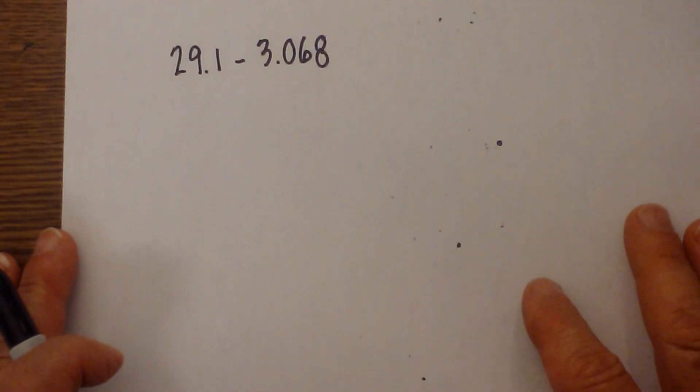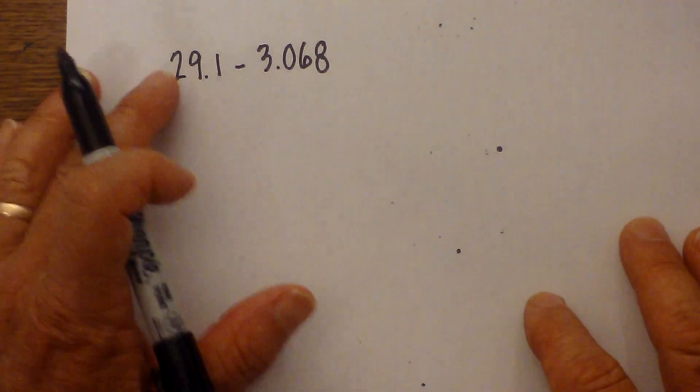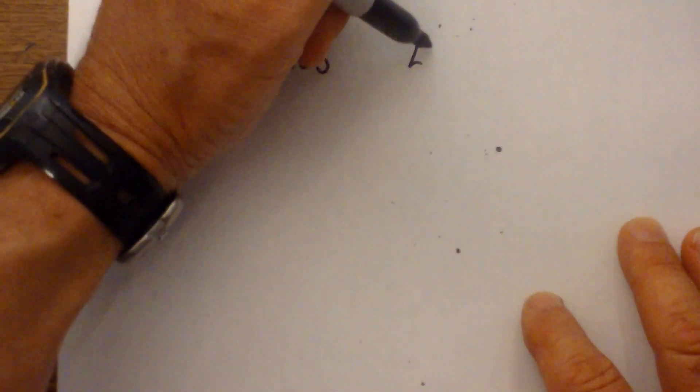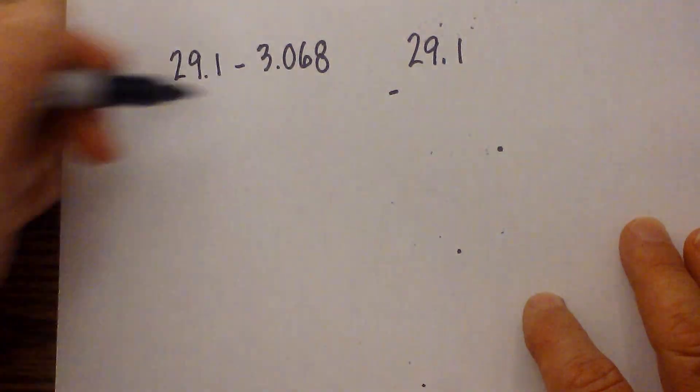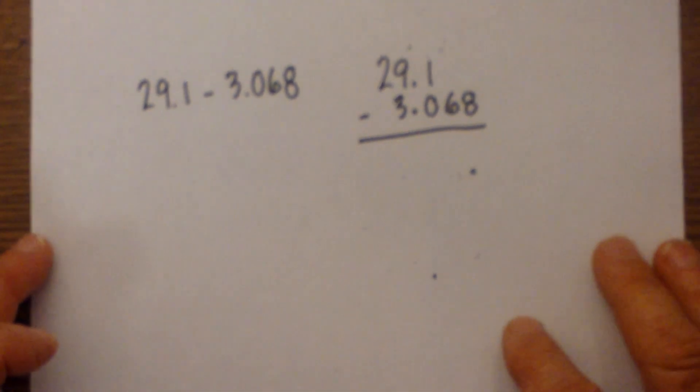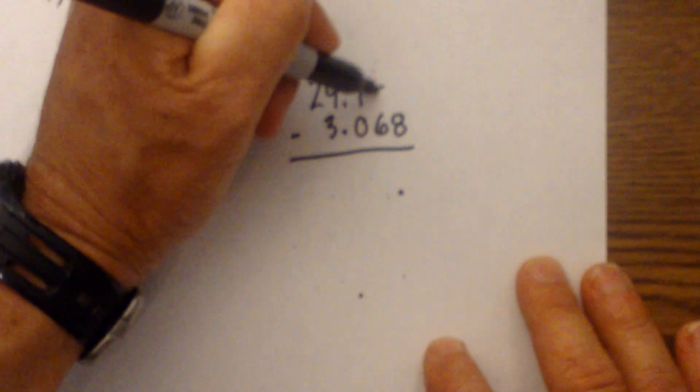Okay, let me work this one first. 29.1 minus 3.068. I'm going to rewrite 29.1 minus 3.068. Notice I've lined up the decimal, and you can see this is where adding some zeros will really help as placeholders, makes it a little bit easier to subtract. So I'm going to add zero zero.